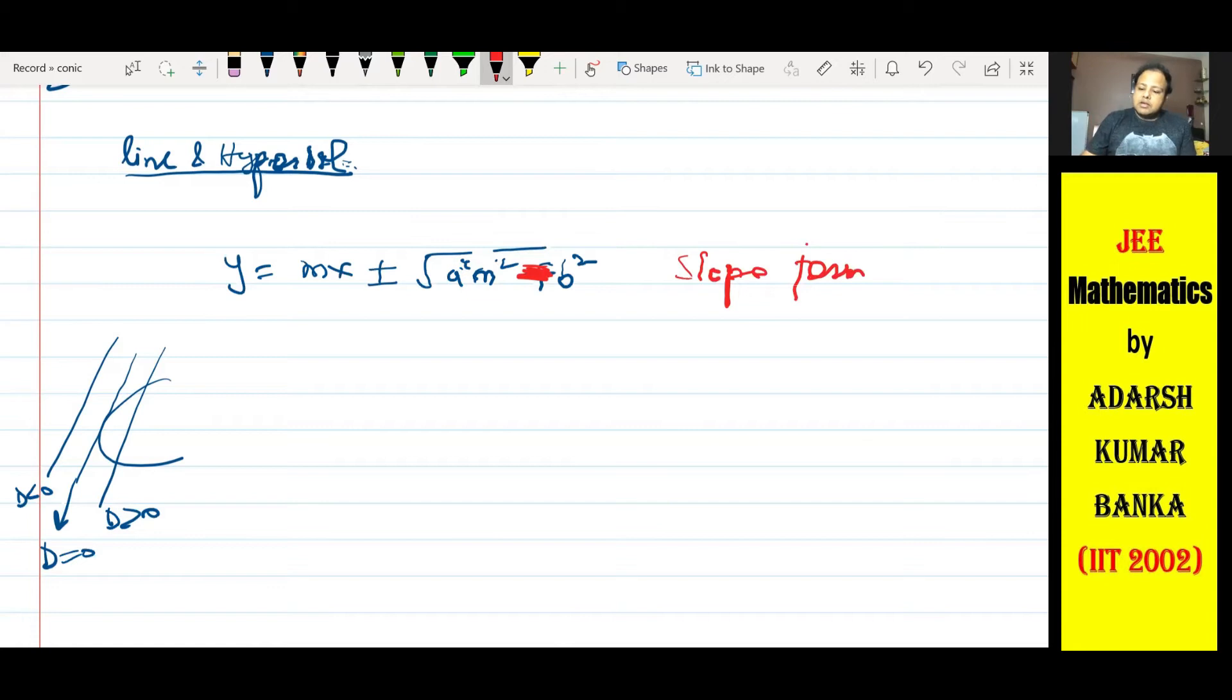Pen is giving some issue. Please bear with me. This is called slope form of tangent.